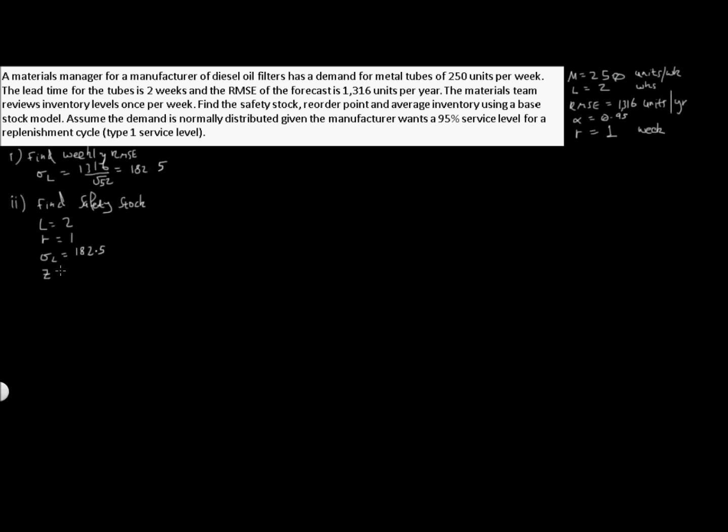Our Z, if we remember from our last problem, we used norm S inverse 0.95 and that gave us 1.64. So we can go ahead with our safety stock equation which is safety stock equals Z sigma L. Now this time when we have the square root, the difference is it's the lead time plus our review period. So there's 1.64 times 182.5 times the square root of our lead time 2 plus 1, the review period, to give us the square root of 3. So we calculate through and we get 518 units of safety stock.